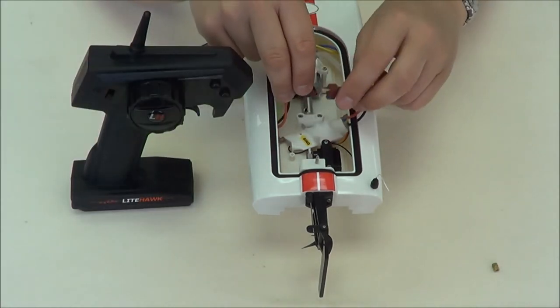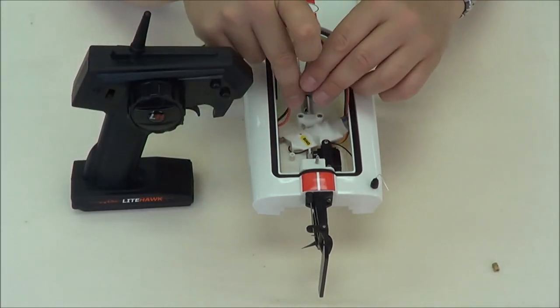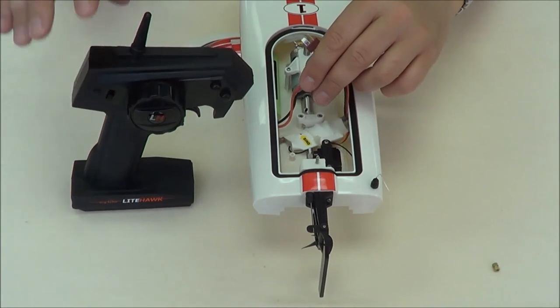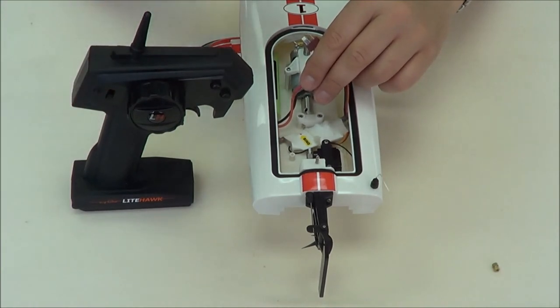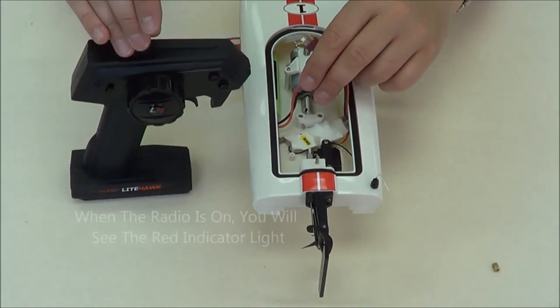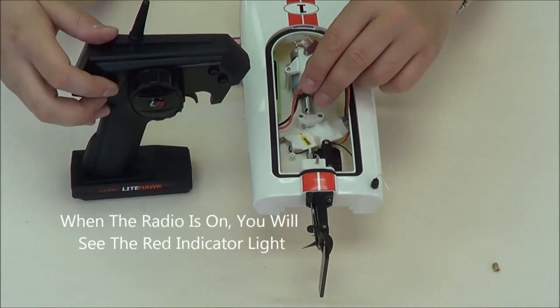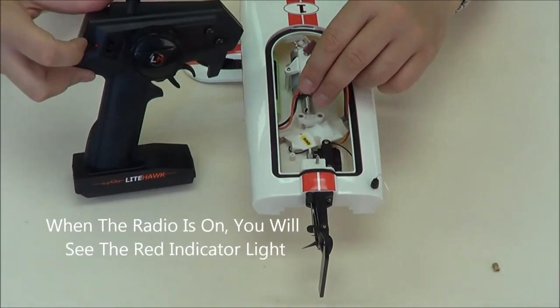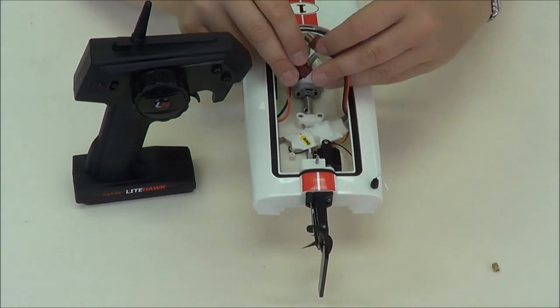You're going to plug this in—it powers the unit. If we plug this in first and then turn on the radio, you could cause the boat to start hunting for a radio that's not there. So we always want to turn the radio on first. You'll see a little indicator light just over here. Turn that on, and then we're going to plug this in.